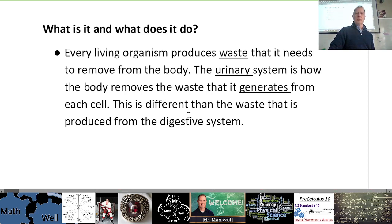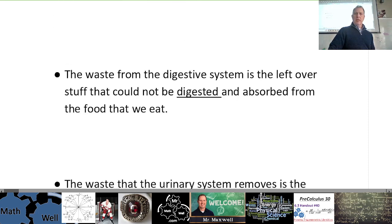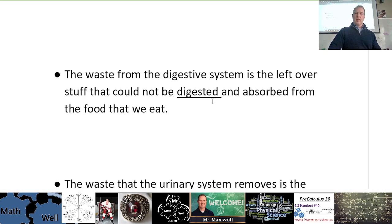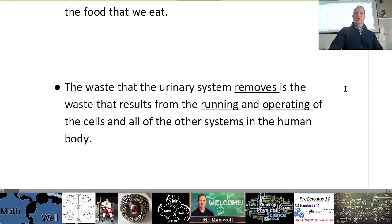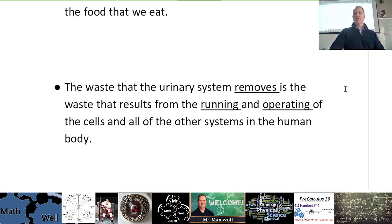This is different than the waste produced from the digestive system. The waste from the digestive system is the leftover stuff that could not be digested and absorbed from the food that we eat — that's what ends up as feces in your large intestine, the stuff your body couldn't use. The urinary system is a little bit different. The waste it removes is the waste that results from the running and operating of the cells and all the other systems in the human body.